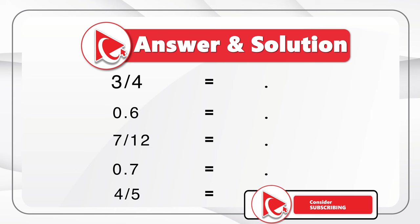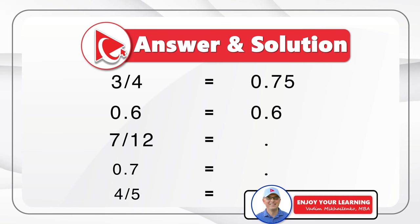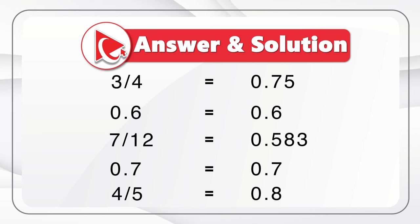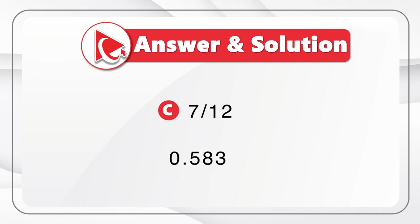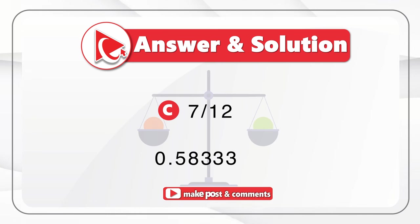Seven-twelfths is 0.583. 0.7 has the same value of 0.7, and four-fifths is 0.8. You can now easily see that the smallest value is choice C, seven-twelfths, which is approximately 0.5833. Did you get to a similar solution? If not, please post your answer in comments.